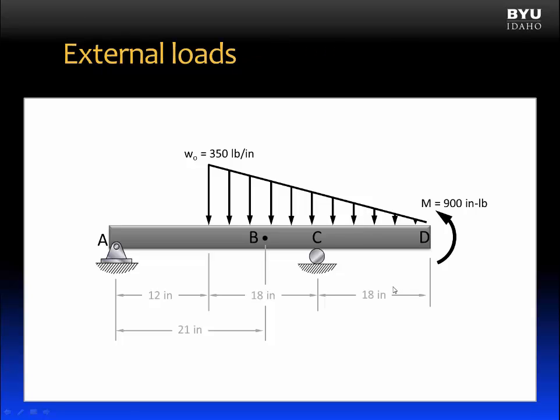For example, here is a beam structure with two supports: a pin support at A and a roller at C. There are loads applied to this beam—a distributed triangular load with a maximum value of 350 pounds per inch, and a point moment at D.